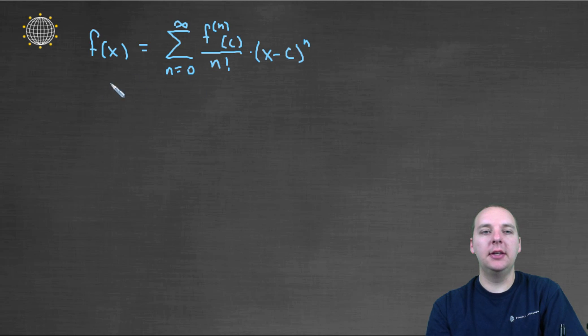The obvious place to start is with the general template of a Taylor series. What you have is the nth derivative of the function evaluated at the center, divided by n factorial times x minus c to the nth power. Now notice out of all these terms, the n factorial and the x minus c to the n, those don't depend on the function.